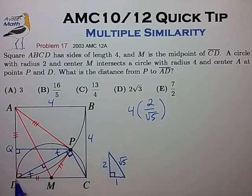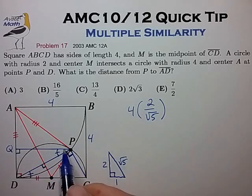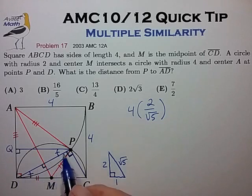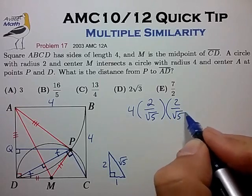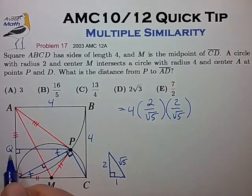And now to go from DP to PQ, we also have a hypotenuse long leg relationship. And so we can just multiply again by the ratio of 2 over root 5 to arrive at length QP.